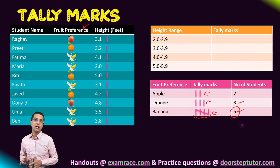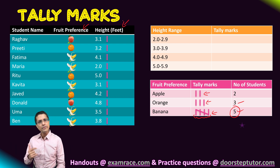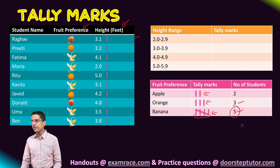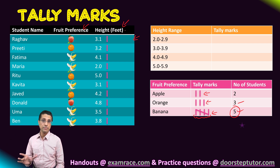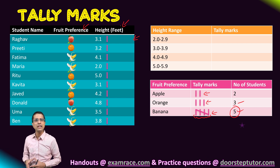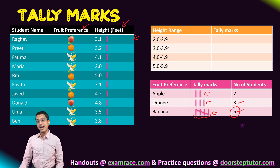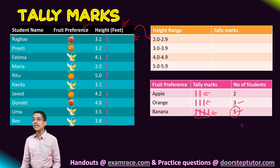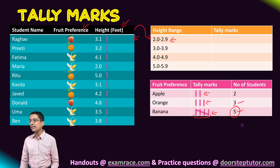Similarly, we can also count frequency for a continuous variable such as height. For a continuous variable, there are no ready-made categories since it can take any possible value. So we artificially categorize the height by creating ranges known as class intervals. These intervals are created according to our own choice, and now we can classify each height into one of these four ranges.